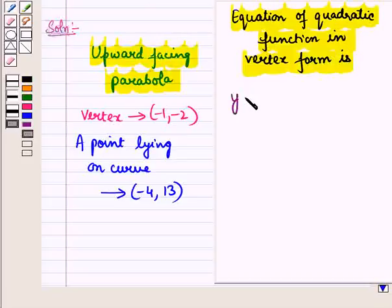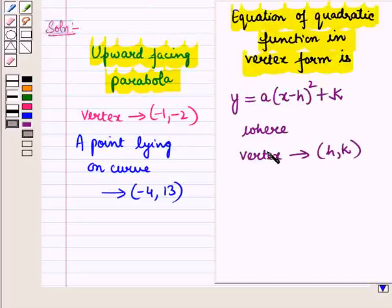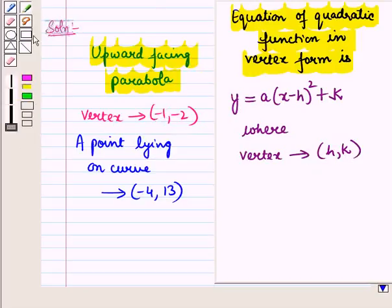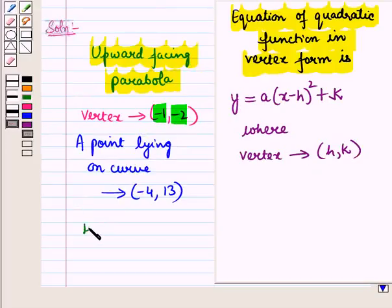Now we know that the equation of a quadratic function in vertex form is given by y is equal to a into x minus h whole square plus k, where the coordinates of the vertex are given by h, k.